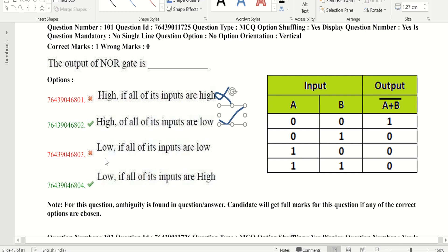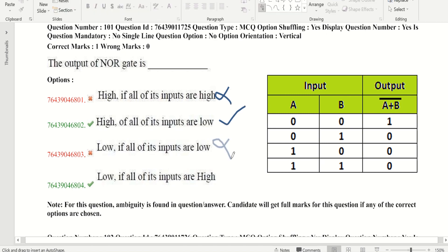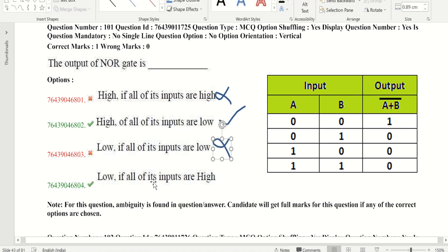Coming to third option, here low if all inputs are low. If all inputs are low, then output should be also low. But we got a high output. So it's false. Next, low if all inputs are high. Yes, it's true. Here two options are correct.